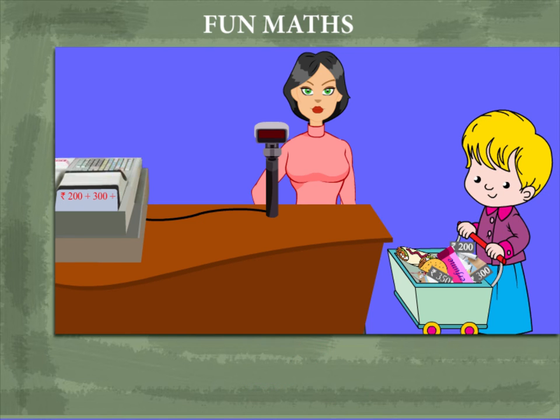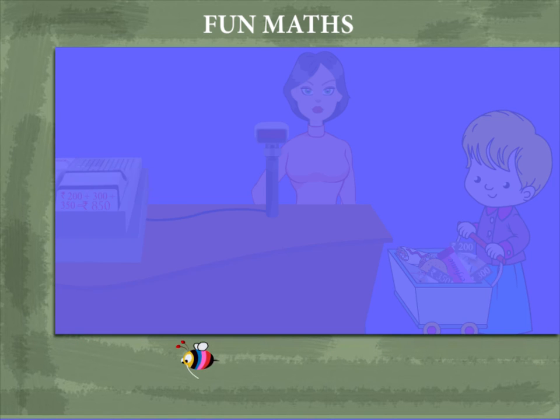So, rupees 200 plus 300 plus 350 is 850. Rinki hands over a 1000 rupee note.